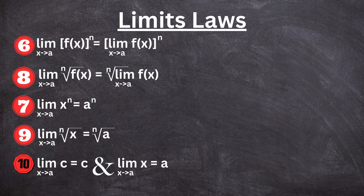This limit is pretty much simple. The limit of a function raised to an exponent is the same as the limit raised to an exponent. The limit of a square root is the same as the square root of the limit, or any nth root of the limit. The limit of x raised to a certain exponent is the same as the value approaching raised to an exponent. The limit of an nth root of x is the same as the nth root of the value that it's approaching. The limit of a constant is a constant, and the limit of x is always the value that it's approaching.